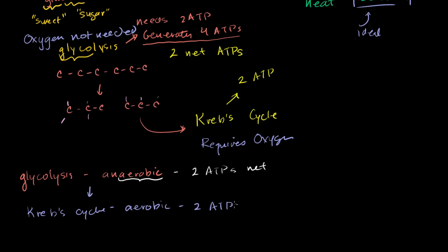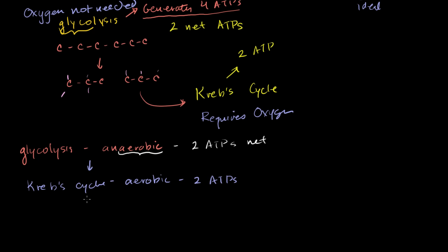Then you have something called the electron transport chain, and this part gets credit for producing the bulk of the ATPs: 34 ATPs. This is also aerobic, it requires oxygen. So you can see, if you had no oxygen, if the cells weren't getting enough oxygen, you can produce a little bit of energy, but nowhere near as much as you can produce once you have the oxygen.